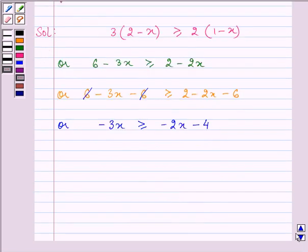So now, on adding 2x both the sides, we have the inequality as minus 3x plus 2x is greater than or equal to minus 2x minus 4 plus 2x.